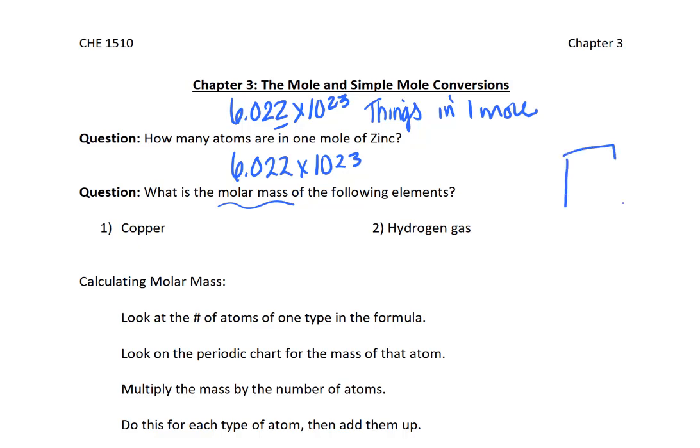On the periodic table, if we look at something like copper, the molar mass is going to be listed down here. So you're going to look at your periodic table, you're going to find the molar mass of copper. The periodic table I'm using has 63.55 grams per mole as the molar mass of copper.